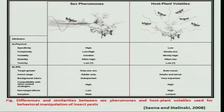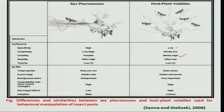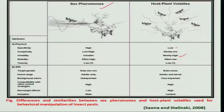What is the main difference between sex pheromones and the chemicals produced by the host plant? Host plant chemicals are mostly volatile, they are not specific, and they are going to attract both sexes of insects as well as other species. Whereas sex pheromones are going to attract only a particular species or the same species, and their volatility is variable from low to high.